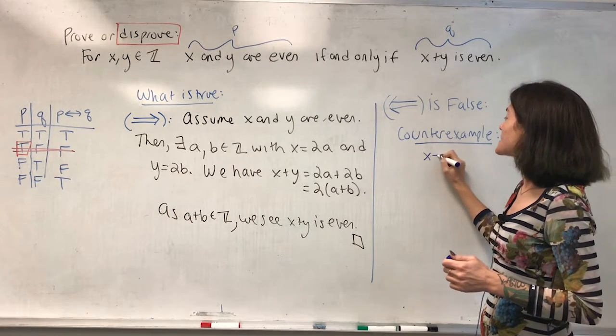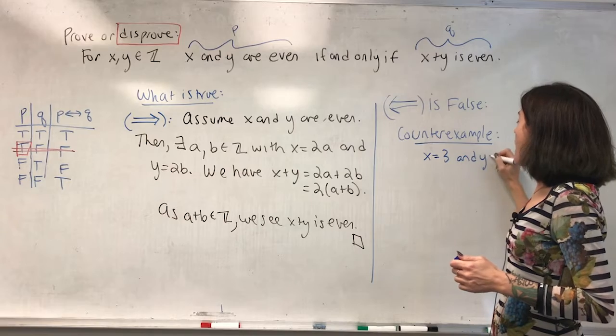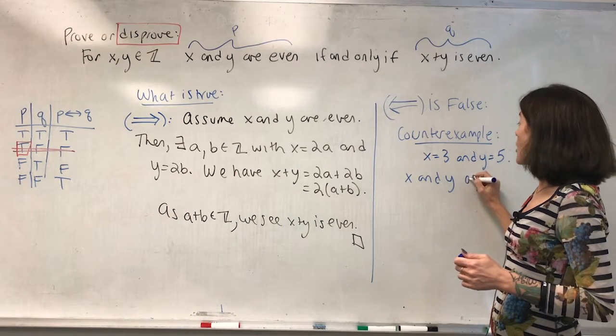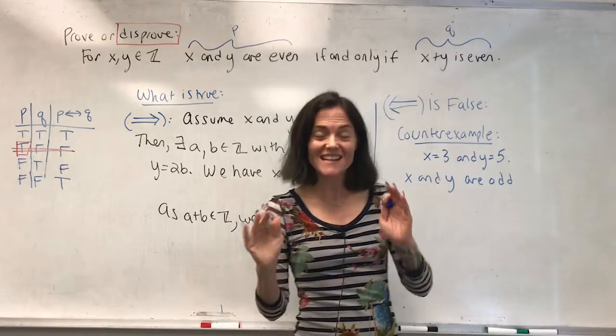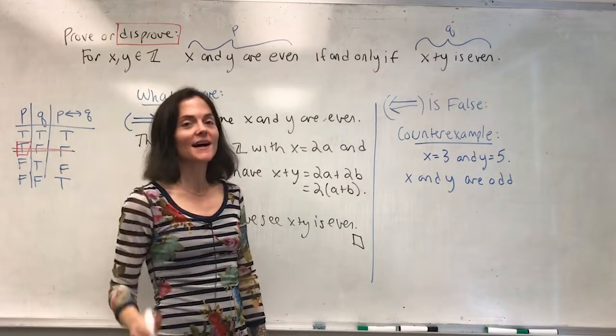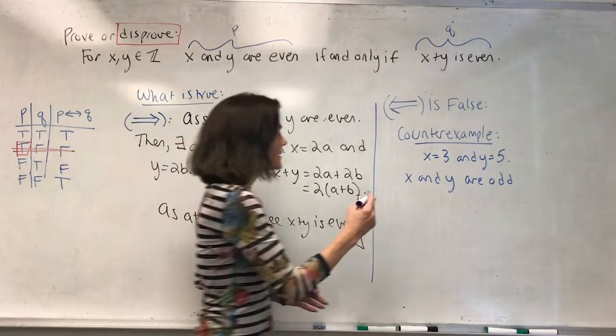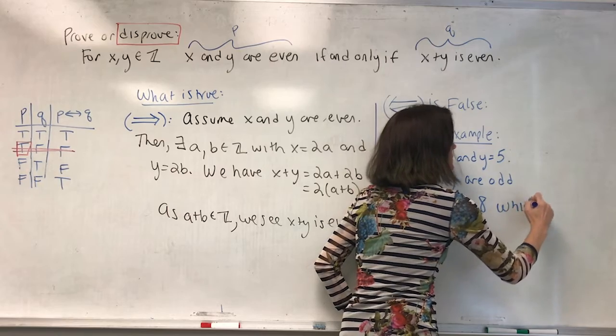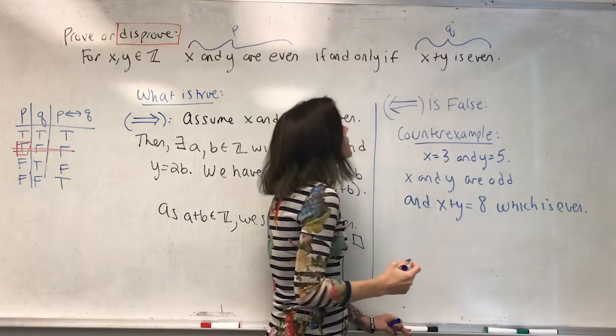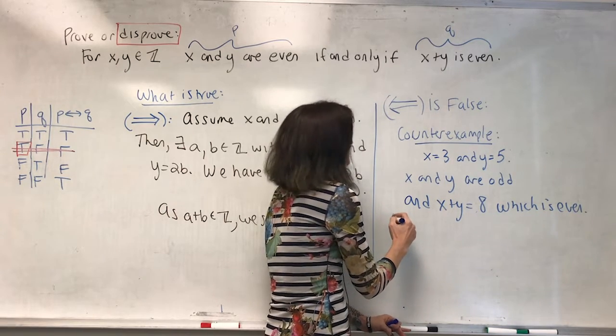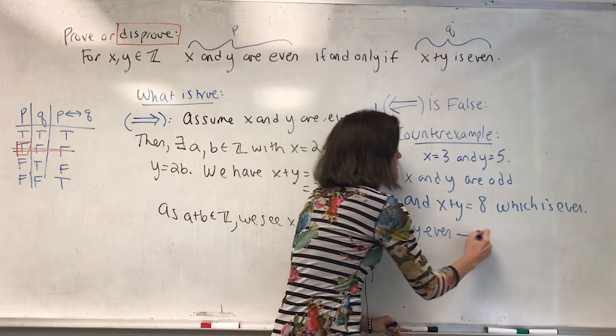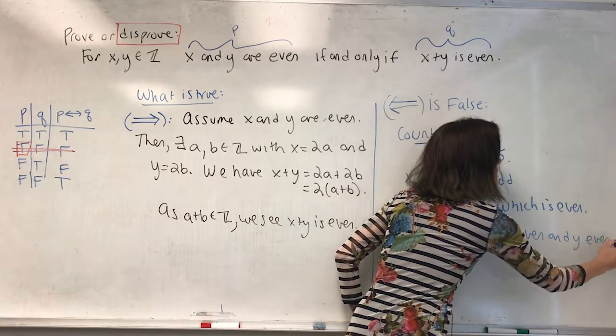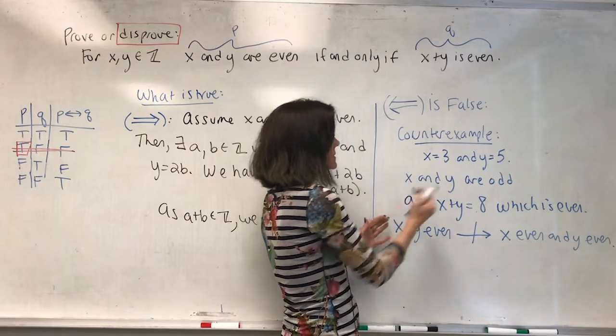Counterexample. Let's take x is 3 and y is 5. x and y are odd. We know we can assume every integer is even or odd, but not both. Neither x nor y is even. And x plus y is 8, which is even. Therefore, x plus y even does not imply x even and y even.